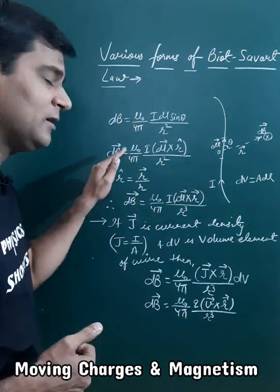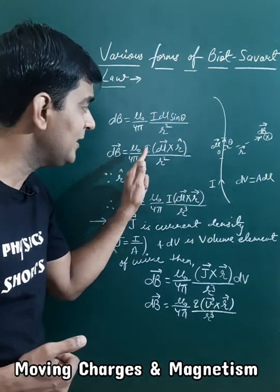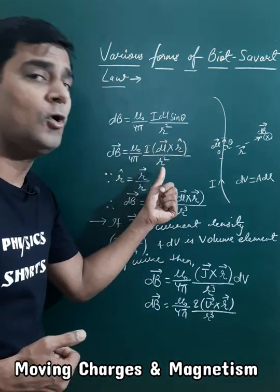In vector form, dB vector will be mu_0 upon 4π idl cross r_cap upon r².